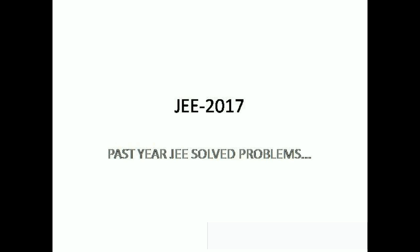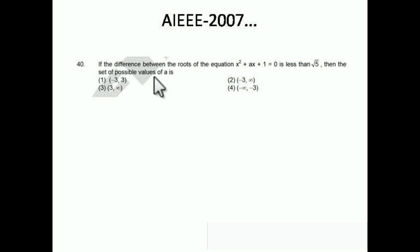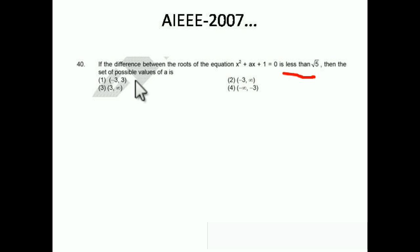Let's see the first one. The difference between the roots of the equation x² + ax + 1 = 0 is less than √5. That means the difference of the roots is less than √5. Then find the set of possible values of A. This is a question about roots of an equation — we know all the formulas, we just have to apply basic things.